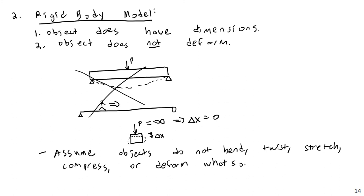Because rigid bodies have dimensions, if I apply a force P off-center from the center of mass, the body will have both the tendency to translate and to rotate. So in static analysis of rigid bodies, we need to consider both translational and rotational forces. In terms of equilibrium, we'll have: summation of forces in x = 0, summation of forces in y = 0, summation of forces in z = 0 — and also the sum of moments about the x, y, and z axes all equal to zero. Compare that to the point particle model, where we only need the three translational equations.